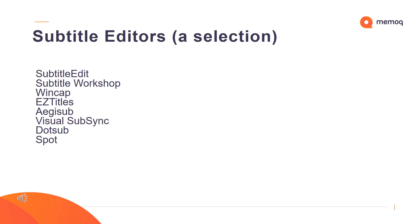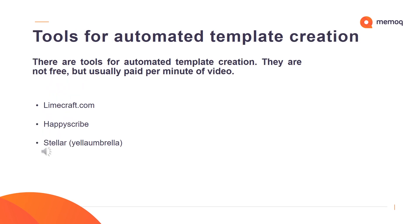There are many different subtitle editors, but none of them offer the advanced translation functionalities MemoQ does. Therefore, I suggest that you use MemoQ for the translation and an editor you like for some additional file handling as needed. Check out the list here and add other editors in the comments if you know any. There are also some tools for automated template creation — they might be useful if you just receive a video without a video template, but bear in mind that you will always need to check and edit these automated templates before you can work with them.